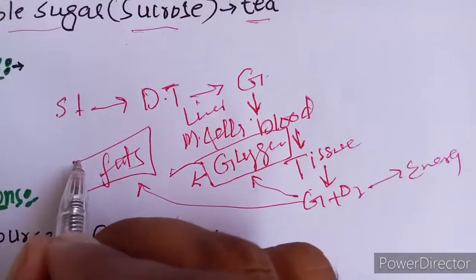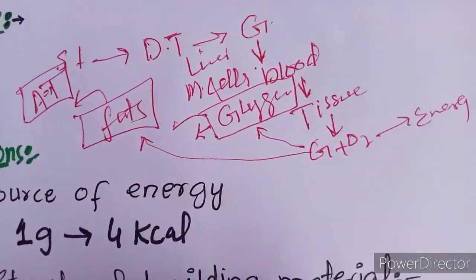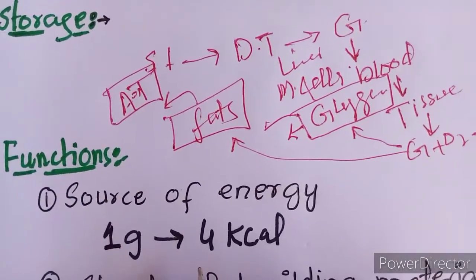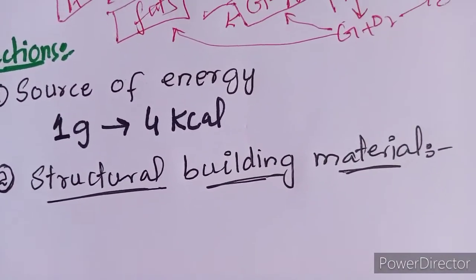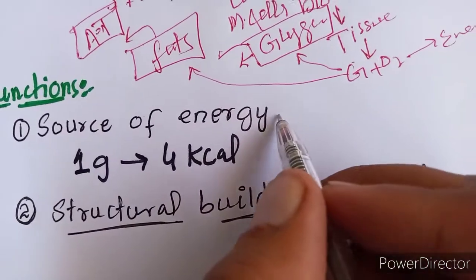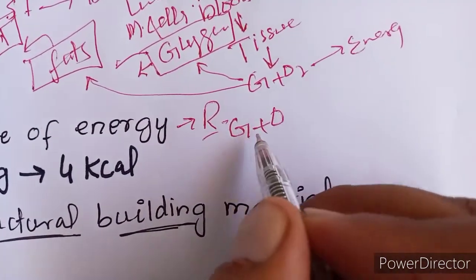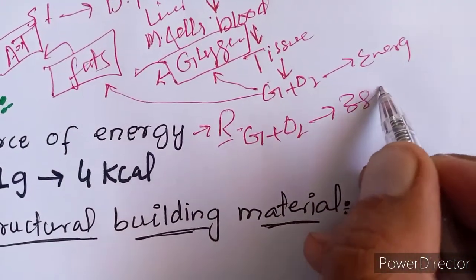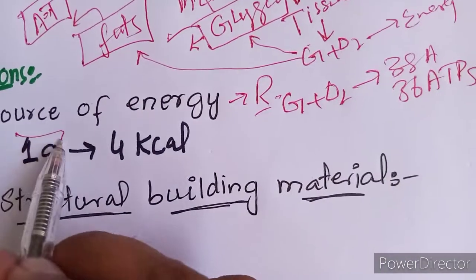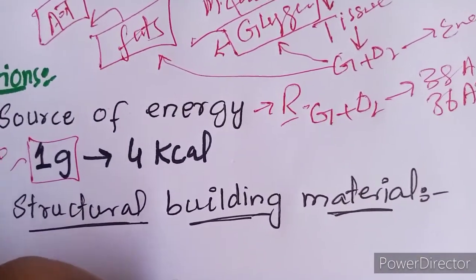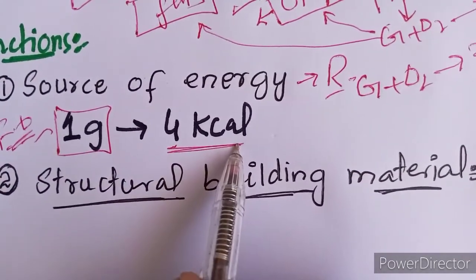Glucose is oxidized with oxygen to release energy. Carbohydrates with oxygen produce 36–38 ATP, with a net gain of 36 ATP of energy. When 1 gram of glucose is fully oxidized, it produces 4 calories. This is the energy value of carbohydrates.